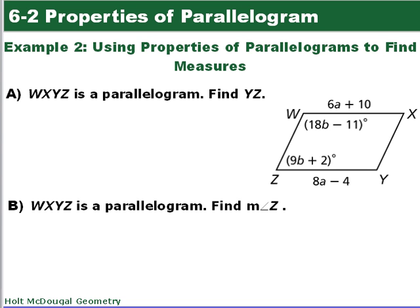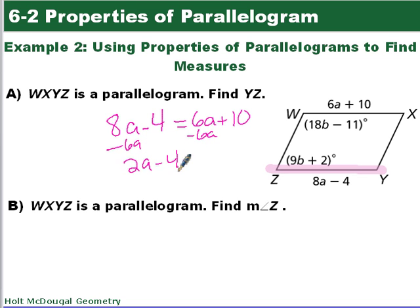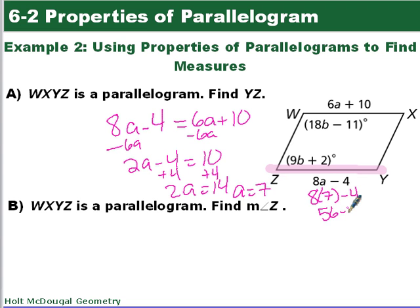So now we want to find the measure YZ. We have a parallelogram. We're looking for the length of YZ, which happens to be here. And so we know that opposite sides are congruent. 8A minus 4 equals 6A plus 10. Subtract 6A from both sides. 2A minus 4 equals 10 plus 4. 2A equals 14. A equals 7. Substitute that back in: 8 times 7 minus 4 is 56 minus 4, which is going to be 52. We have no units.